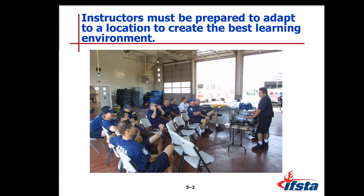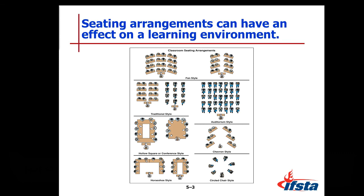The next slide shows a couple of training environments we normally train in. Seating arrangements can have an effect on a learning environment. You've got your fan style, traditional style, auditorium style, hollow square or conference style, chevron style, horseshoe style, and circle chair style.